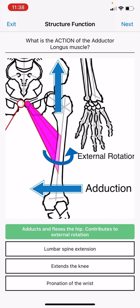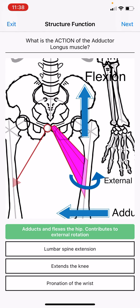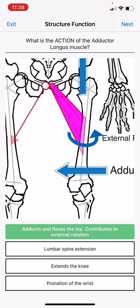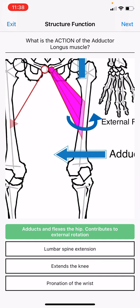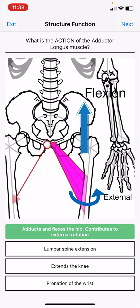And lastly, because it's oriented from top to bottom, the adductor longus can also contribute to flexion of the thigh — that's bringing the knee, or really the leg as a whole, up towards the chin or the stomach region.